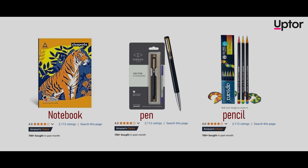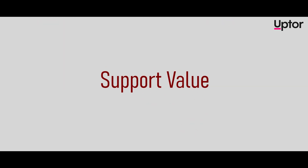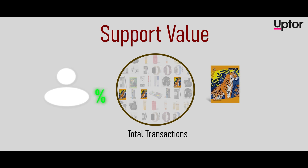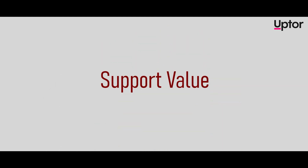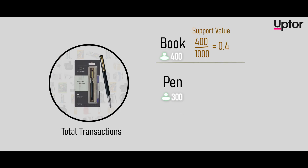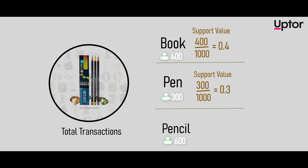Notebook, pen, pencil. We will check the support value step by step. If you want to check any one item, the total number of transactions will be considered. We are looking at 1,000 transactions. We check the support value for each individual item. You can combine the pen and pencil and make it one. Now we've fixed the support value for each individual item.